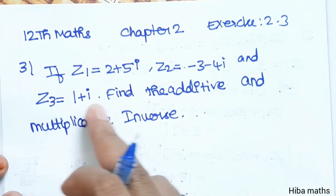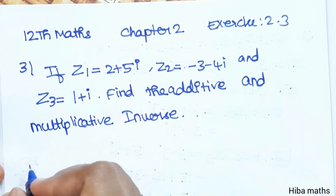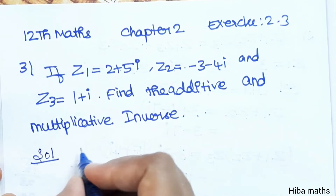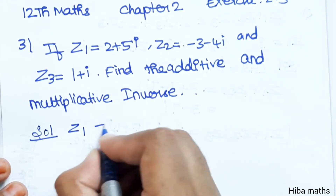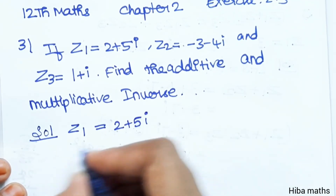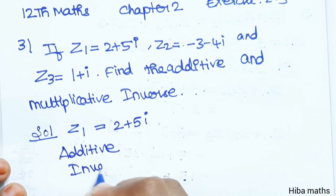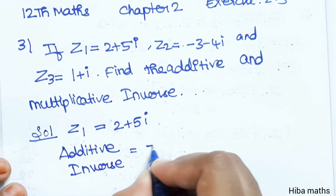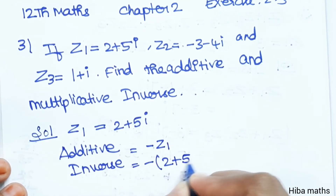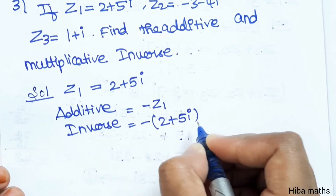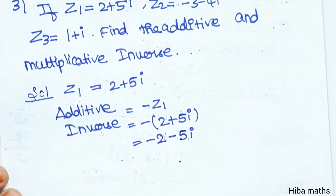Next question: z1 equals 2 plus 5i, z2 equals minus 3 minus 4i, z3 equals 1 plus i. Find the additive and multiplicative inverse of each. For z1 equals 2 plus 5i: additive inverse is minus z1 equals minus 2 minus 5i.